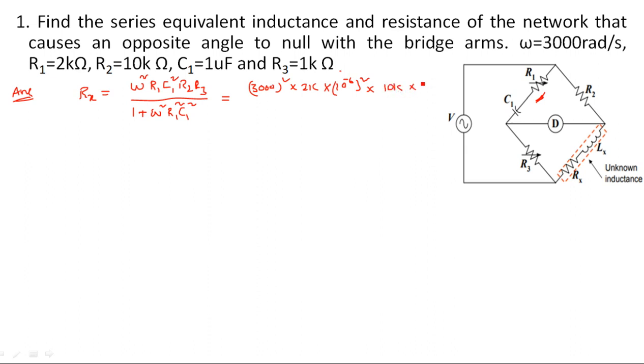What is R2? 10 kilo times, what is R3? 1 kilo divided by 1 plus omega squared, 1 plus 3000 squared R1 squared times 2k squared times C1 squared which is 1 microfarad, 1 times 10 power minus 6 squared. Take the calculator, substitute. You will get the answer 4.86 kilo ohms. This is the value of Rx. Nothing is there, just whenever you are asked to calculate any value, you will substitute the values, take the formula, substitute and get the result.